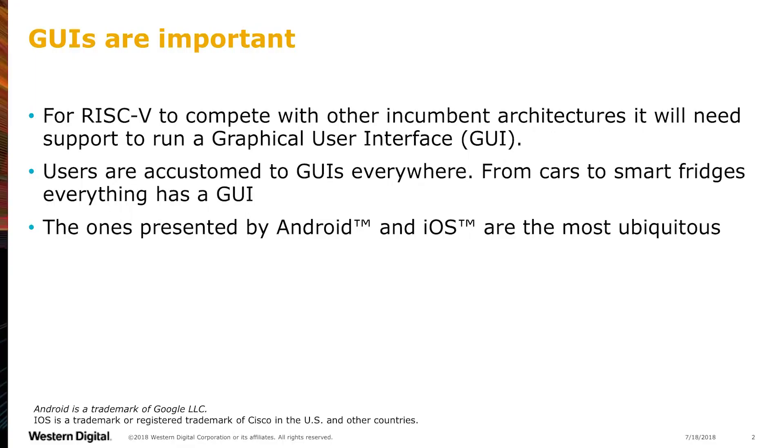So the first question: why do we need GUIs, why do we need graphical desktops? We see RISC-V as a general computing chip, not only something applicable in the embedded domain. To compete in a consumer-based market, we need to have graphical desktops enabled, because otherwise it will be limited to academia and developers. It will never be in the hands of everyday people — something like mobile phones, which represent the most ubiquitous devices, such as Android and iOS. Graphical desktops are necessary from that perspective.